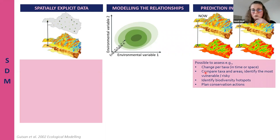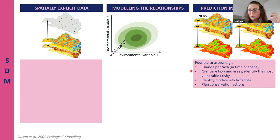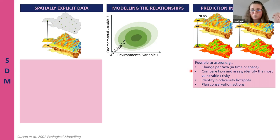From the prediction outputs, we can assess changes in taxa over time or in space, compare different taxa, and compare different areas. If we have made predictions for multiple taxa and areas, we can identify the most vulnerable or risky areas, identify biodiversity hotspots, and plan conservation actions.